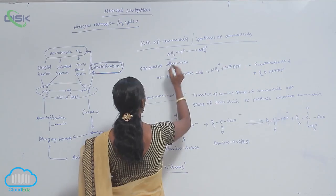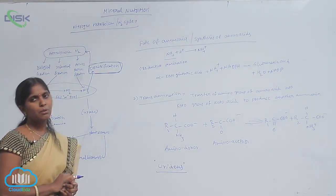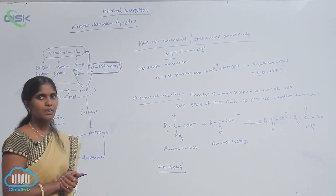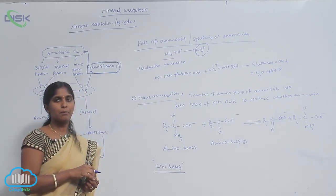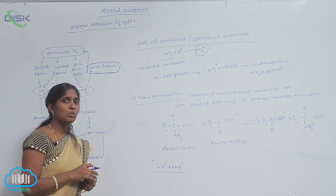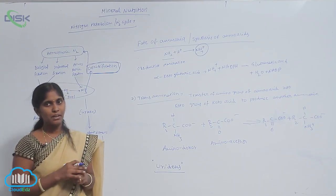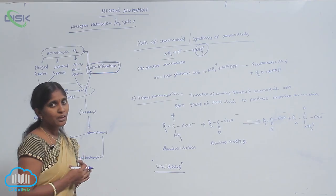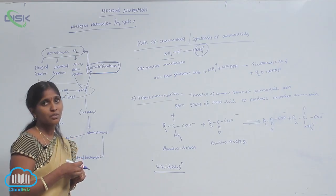The ammonia fixed at the roots of the plants is converted into ammonium. The available, absorbed forms for plants are ammonium and also nitrates. A small amount of the ammonium is used for plant metabolism. The excess amount of ammonia leads to toxicity, so to avoid that, an alternate pathway of ammonia synthesis is undertaken, involving the production of ammonium ions.